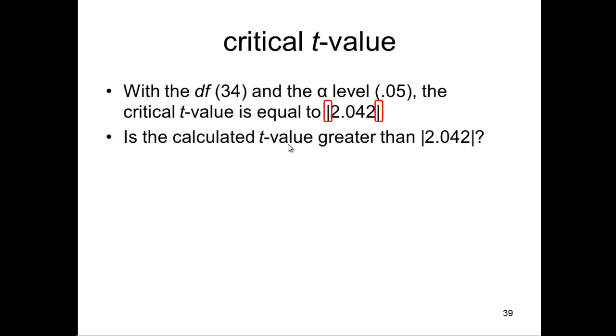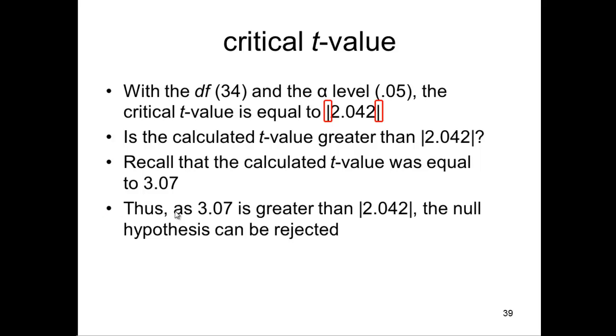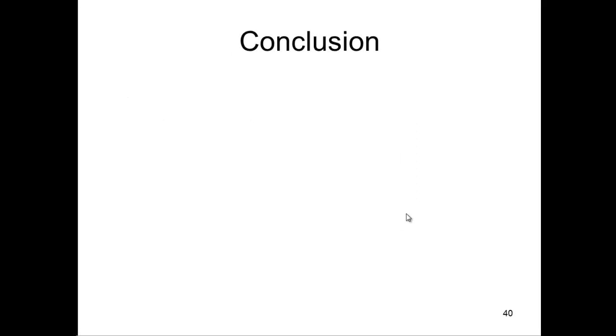So is the calculated t-value greater than the absolute value of 2.042? Recall that the calculated t-value that I got from the independent sample t-test formula is 3.07. So 3.07 is greater than the critical t-value of 2.042. So therefore, the null hypothesis can be rejected. This critical t-value represents what you might expect simply by chance up to 5% of the time. In this case, we've got a calculated 3.047, and it is definitely larger than 2.042.